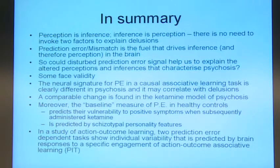And finally, in a study of action-outcome learning, two prediction error-dependent tasks show individual variability that is predicted by specific engagement of these outcome-action associations in a separate task done in the scanner. And I think that's possibly offering us an important clue about the nature of the prediction, the action, and the outcome in psychosis.